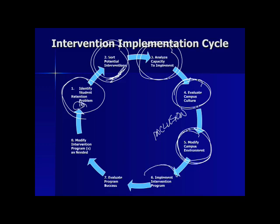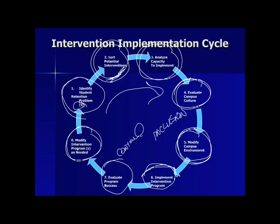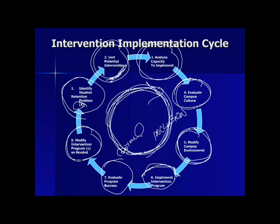We need to implement an intervention that we have selected on the basis of our research, and then we need to evaluate whether it's really working for us. Just because an intervention program works on one campus doesn't mean it's always going to work every place else. We make modifications, customizing it for the particular needs, resources, customs, and culture of a particular campus. Then that brings us back to the beginning of the circle again — and at some point you may need to change the intervention program because you need something different.